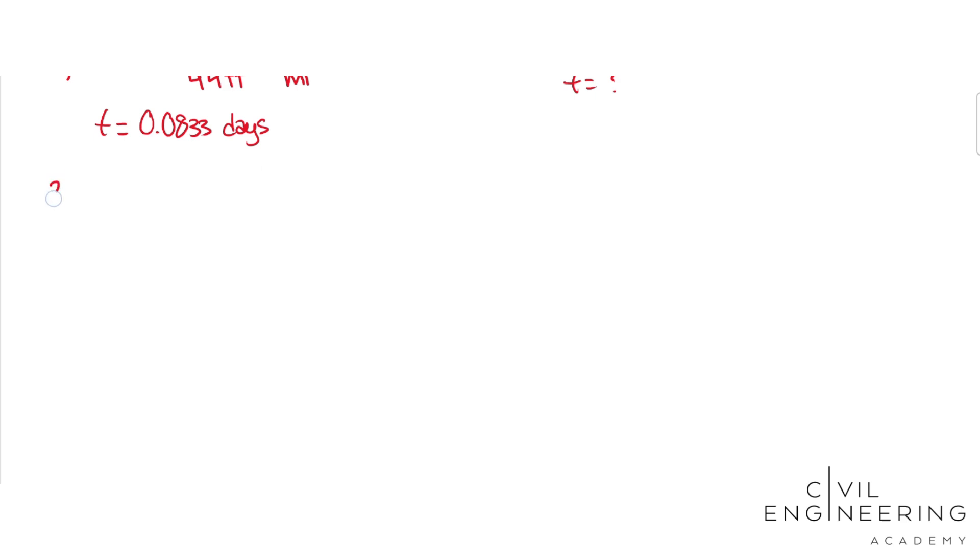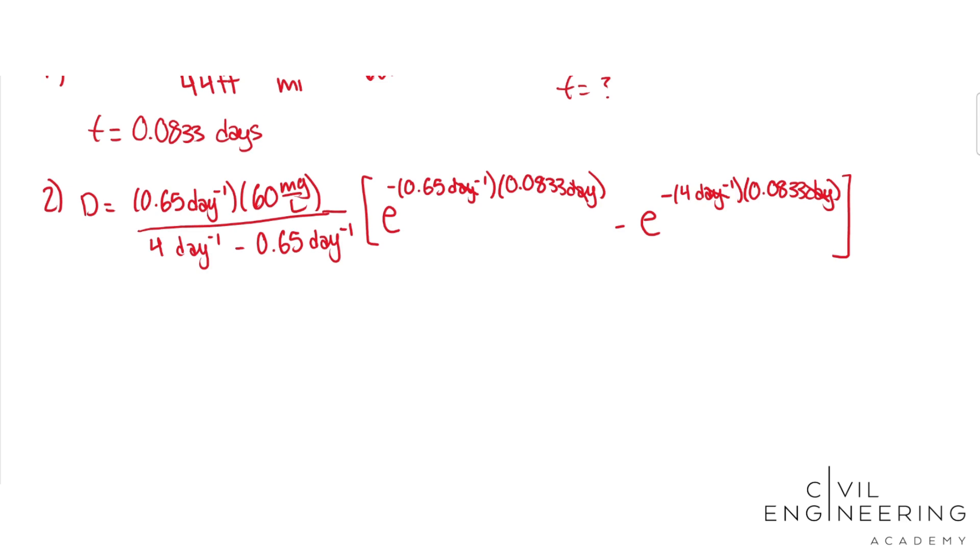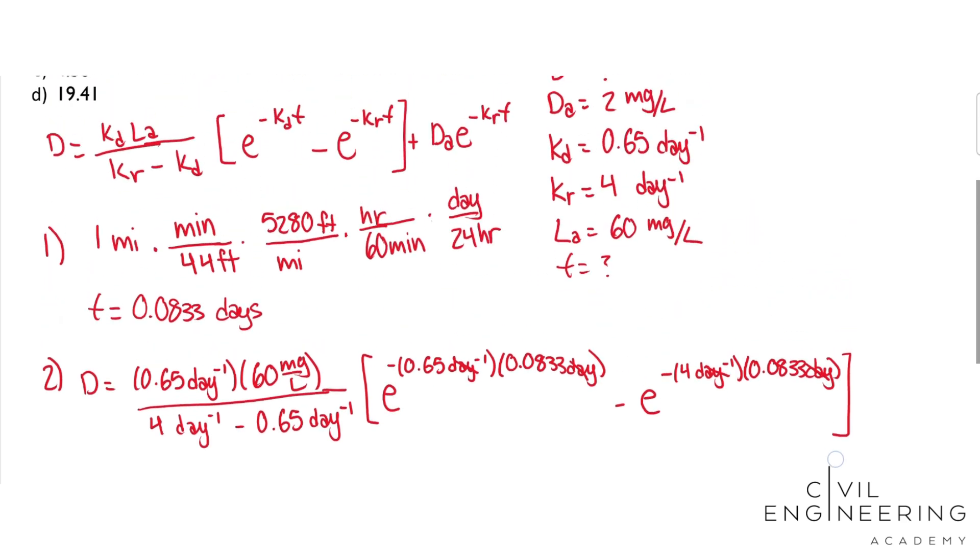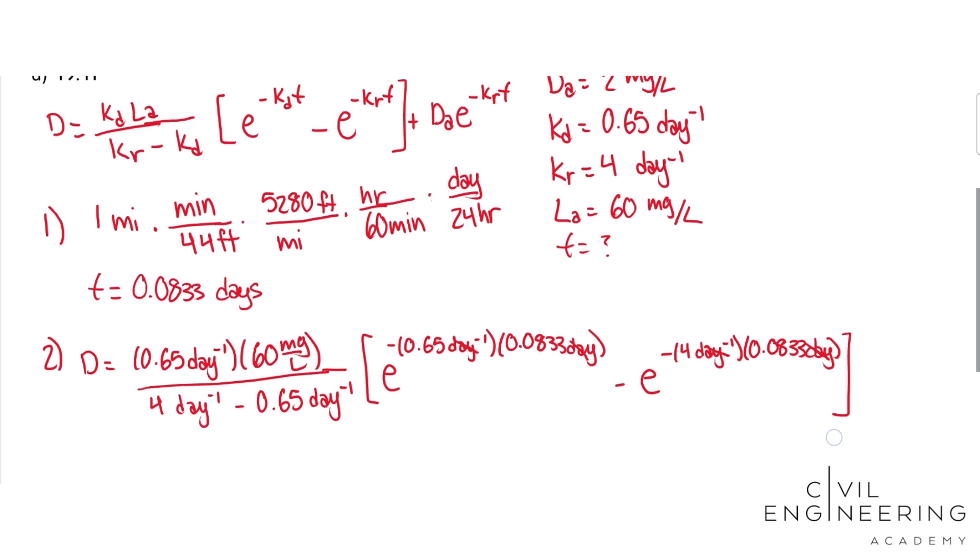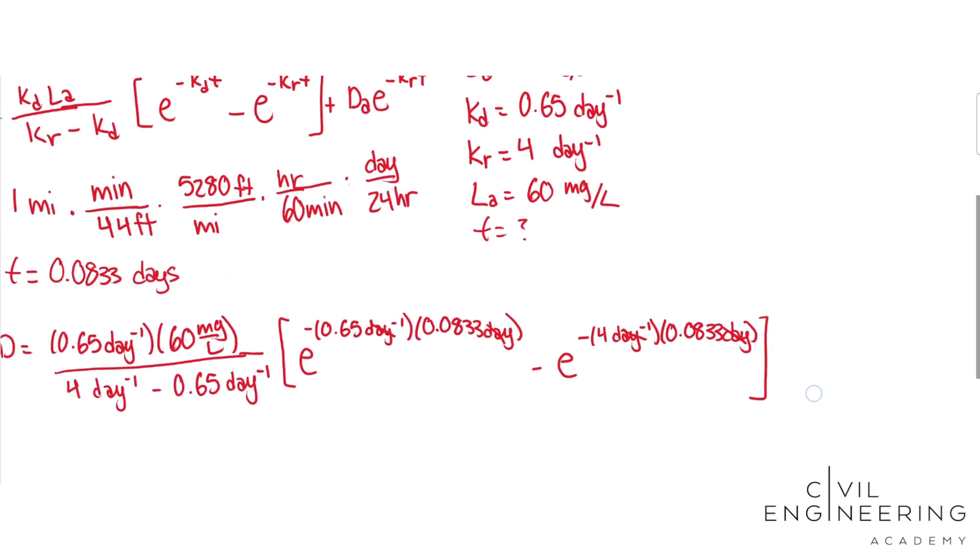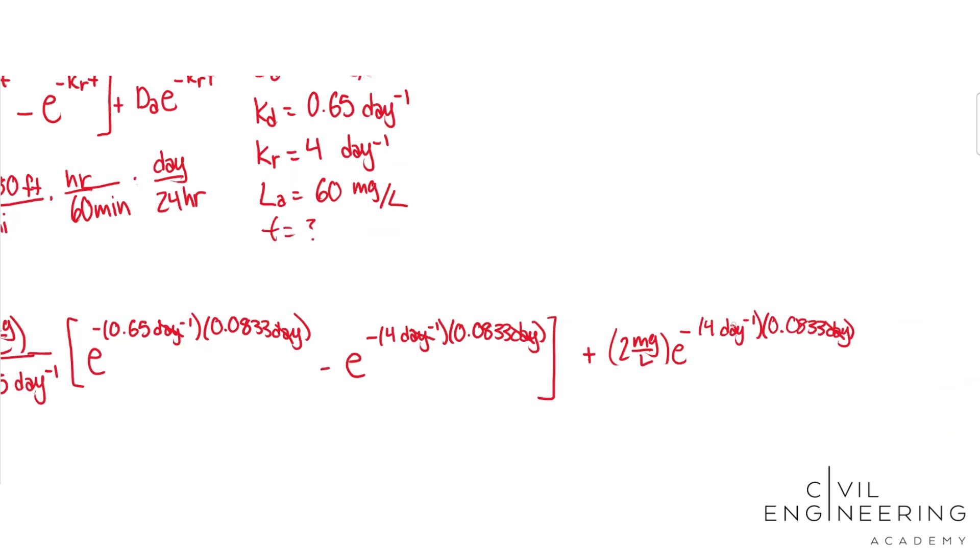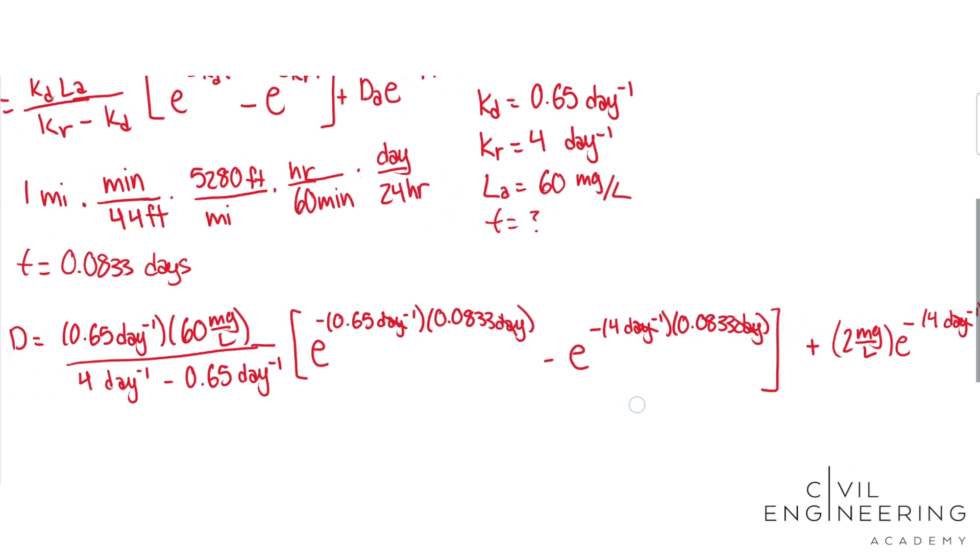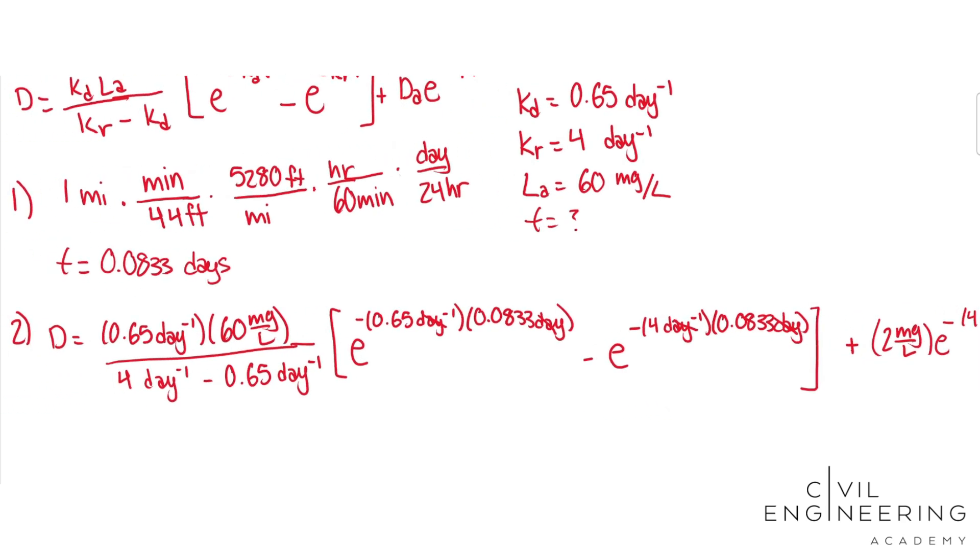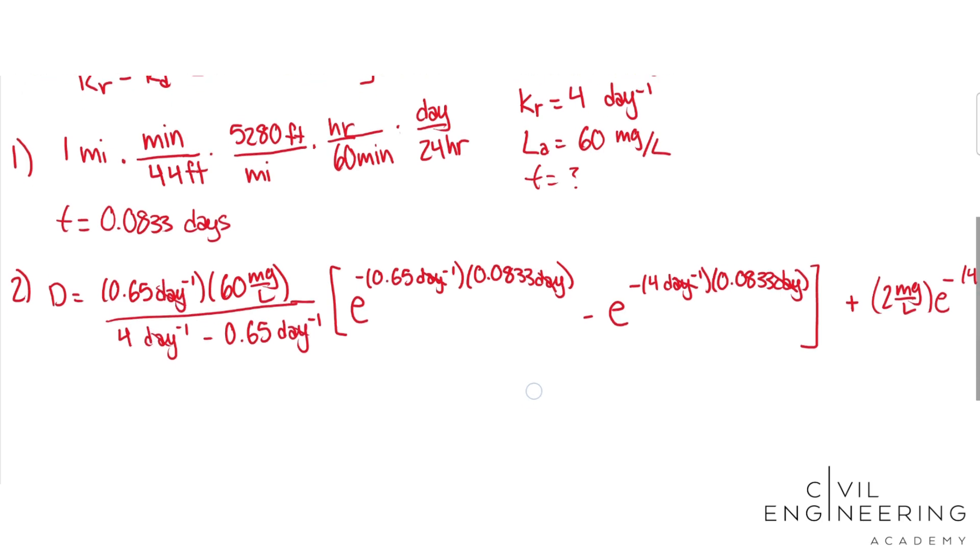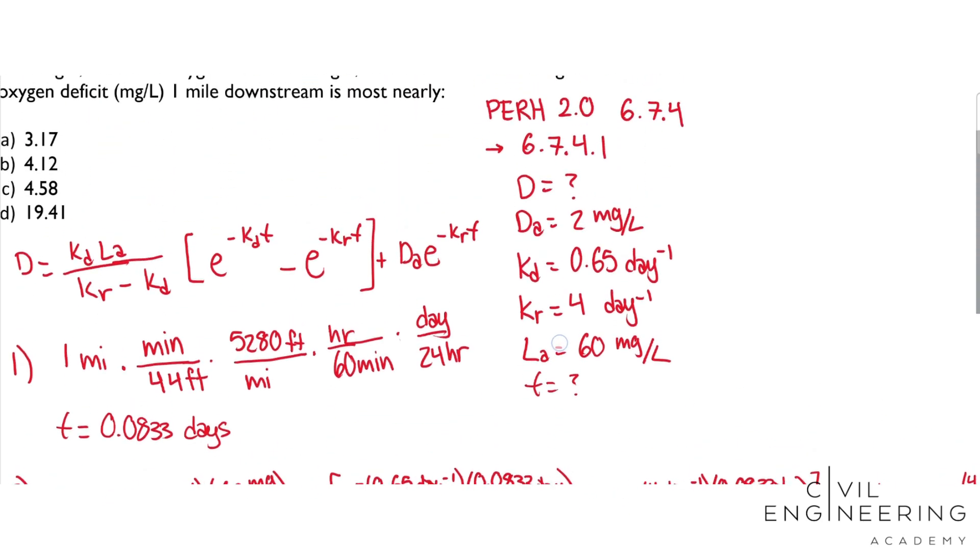Let's do that. We have our last term, which is this initial oxygen deficit. I'm just going to keep writing over here, so those units will cancel. We have milligrams per liter on this side, plus milligrams per liter here, because these day to the negative one will all cancel out. So we know that our answer is going to be milligrams per liter, and that is what we're looking for there.